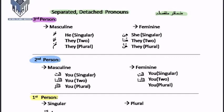For the third person feminine, we use 'hiya' meaning 'she' when she is singular, 'huma' when they are two, and 'hunna' when the women are more than two — that is, plural.